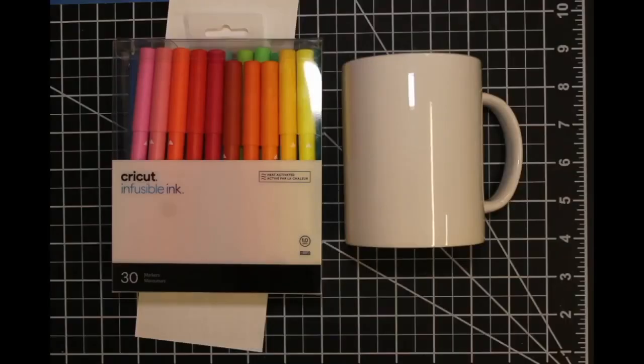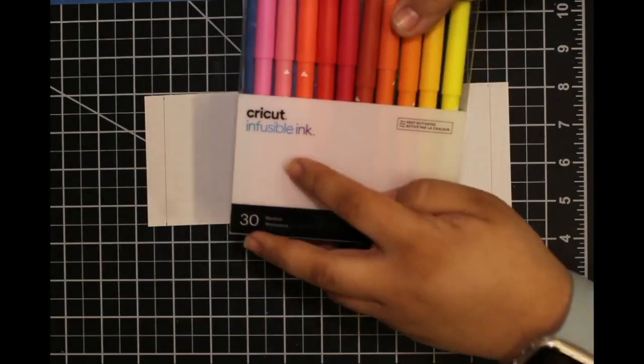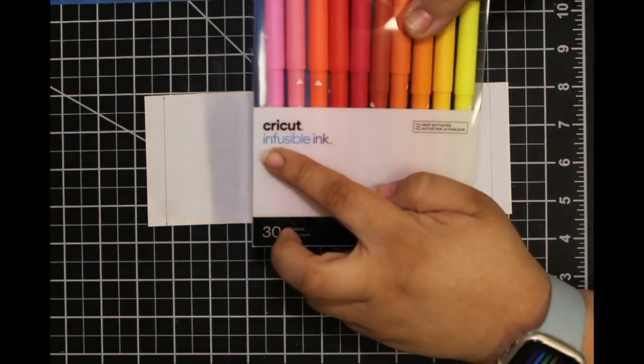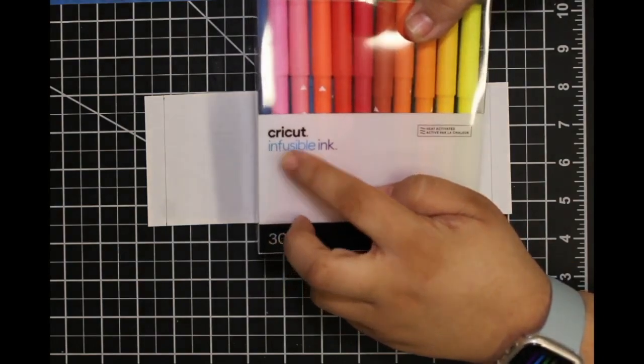For this simple craft, you will be using a paper template, a ruler, a pencil, and infusible markers. These markers utilize a special type of ink that transfers onto different materials and surfaces when properly heated.